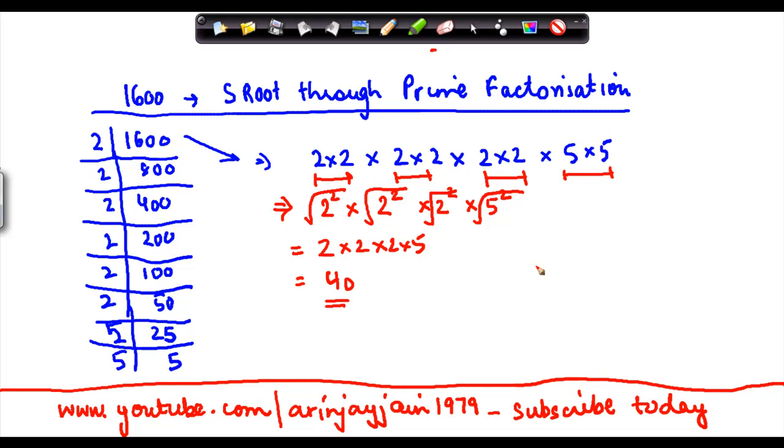Now, is my answer correct? If I do 40 into 40, 1, 2, 0... 4 times 4 gives me what? 1600. So therefore my answer is correct. You just need to follow the defined steps and then it becomes relatively easy.